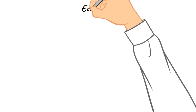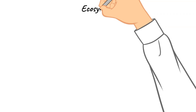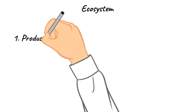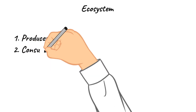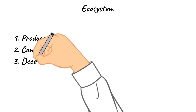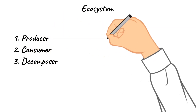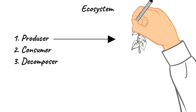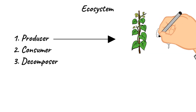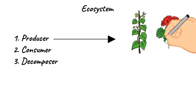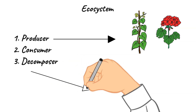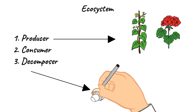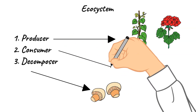Each living thing in an ecosystem has a very important role to play in a food chain. There are producers, consumers, and decomposers. We are going to talk about producers and decomposers a bit in next week's video. For now, you just need to know that most plants are producers because they make their own food through photosynthesis. Decomposers are living things that cause decay and break down the waste products and dead tissues of plants and animals. These decomposers return nutrients to the soil, which helps new plants to grow.